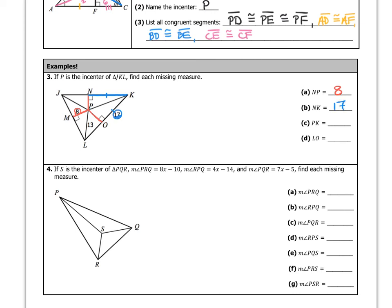The parts requiring more work are PK and LO. For part C, PK: I know NP is 8 and NK is 17, so I can use the Pythagorean theorem: 8 squared plus 17 squared equals X squared, giving 64 plus 289 equals X squared. X squared equals 353, and that rounds to 18.8 for PK.